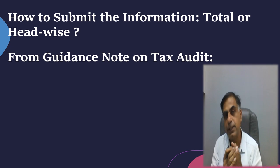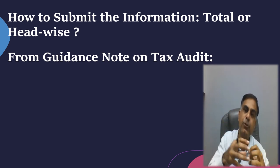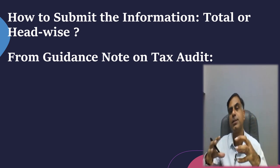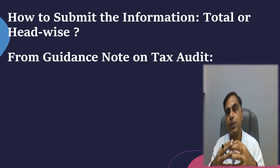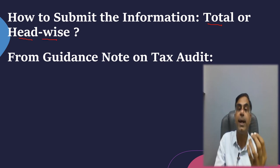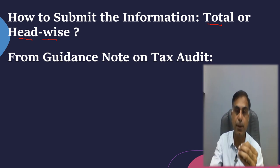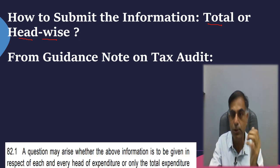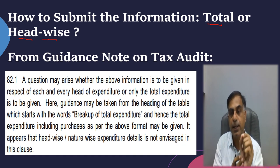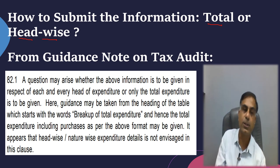Now the million dollar question — very important — is how to submit the information under Clause 44. The question is whether you are going to report the total figure or the head-wise figure. Here I found that the recently issued Guidance Note on Tax Audit by the CA Institute, issued in August 2022, gives a very important clarification in terms of this clause in Para 82.1, wherein it is written: 'A question may arise whether the above information is to be given in respect of each and every head of expenditure or only total expenditure is to be given.'